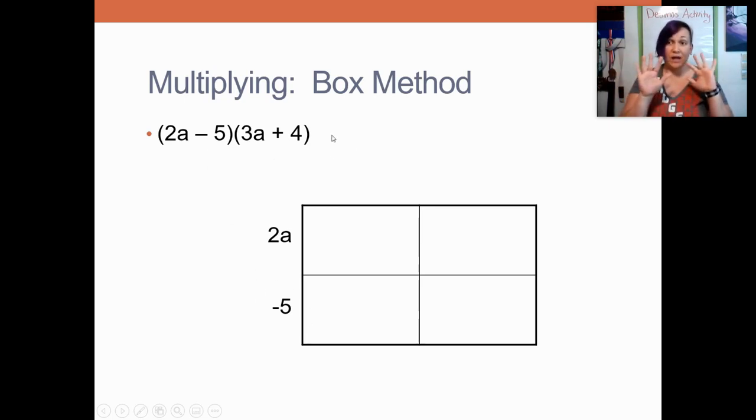And then I do have to keep the 3a plus 4. Those have to be also on the same side. So I'm going to put those both on top, the 3a with one box and then the 4 with the other box. Again, don't mix and match. Don't put the 3a and the minus 5 together or something like that.